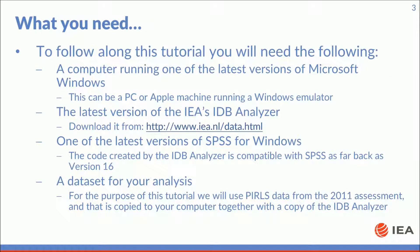To follow along this tutorial you will need the following: a computer running one of the latest versions of Microsoft Windows — this can be a PC or Apple machine running a Windows emulator — the latest version of the IDB Analyzer, which can be downloaded from the IEA website, one of the latest versions of SPSS for Windows, and a data set for your analysis. For the purpose of this tutorial we will use PIRLS data from the 2011 assessment, which was copied to your computer together with your copy of the IDB Analyzer.